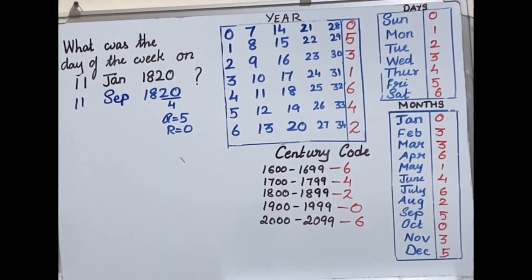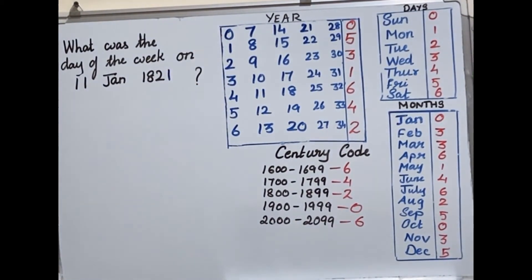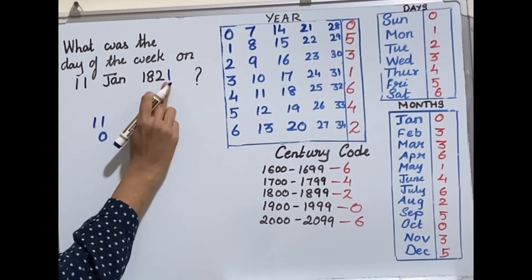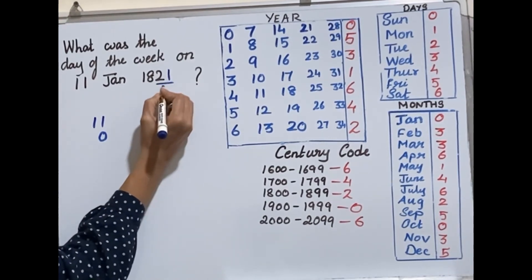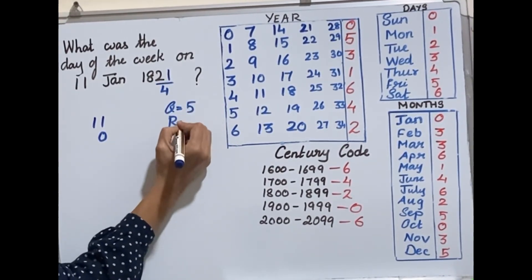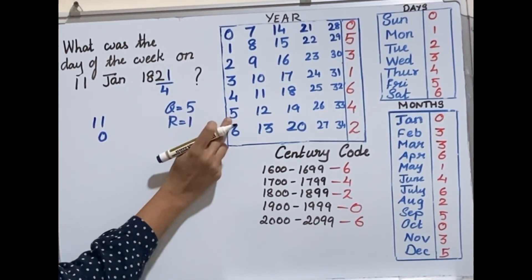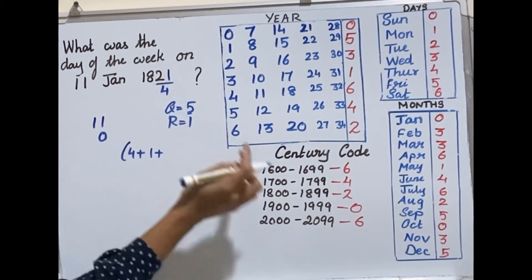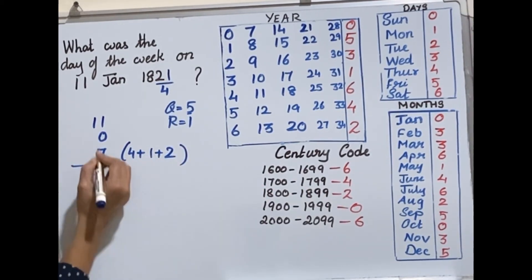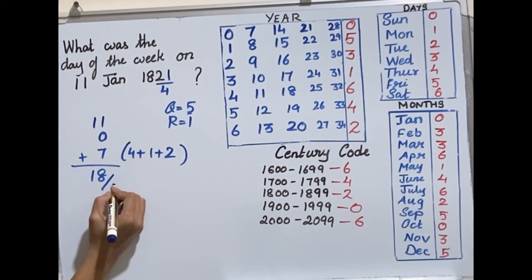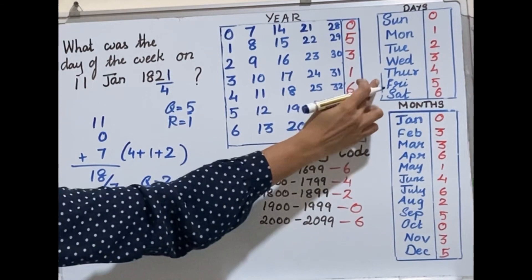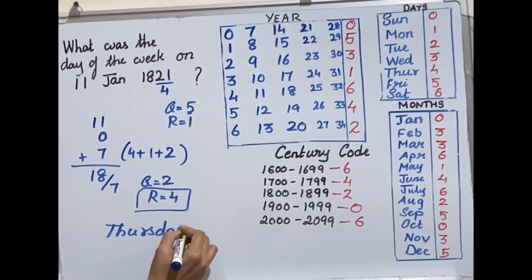Another example: 11 January 1821. Here 1821 is not a leap year, so no subtraction needed. Month code for January is 0. Last 2 digits 21 divided by 4: quotient 5, remainder 1. Code for quotient 5 is 4. Century code is 2. Year value: 4 + 1 + 2 = 7. Total: 11 + 0 + 7 = 18. Divide 18 by 7: remainder 4. Remainder 4 corresponds to Thursday. So 11 January 1821 is Thursday.